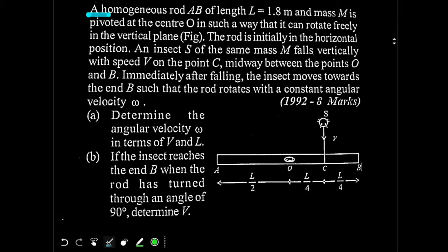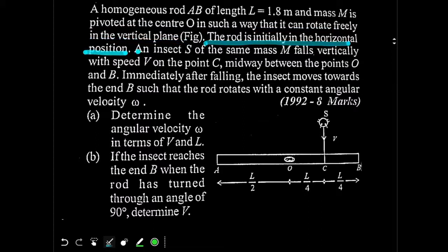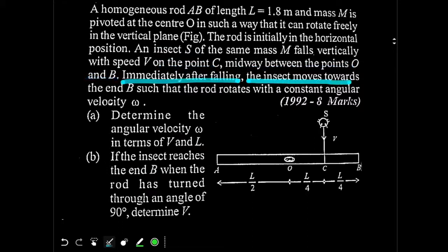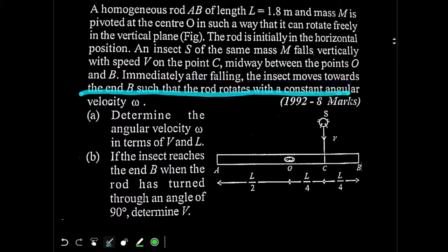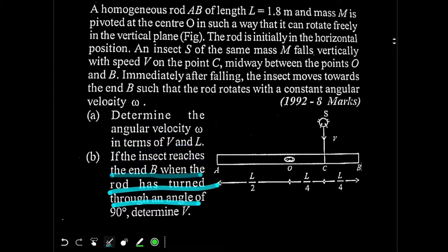A homogeneous rod of length L equal to 1.8 meters and mass M is pivoted at the center O such that it can rotate freely in the vertical plane. The rod is initially in the horizontal position. An insect S of the same mass M falls vertically with speed V on point C, midway between points O and B. Immediately after falling, the insect moves towards end B such that the rod rotates with constant angular velocity omega. Determine omega in terms of V and L. If the insect reaches end B when the rod has turned through 90 degrees, determine V.